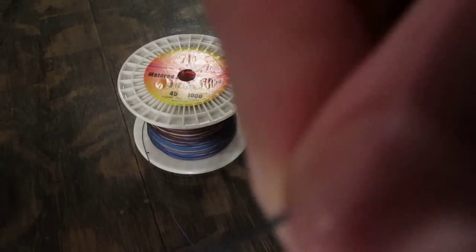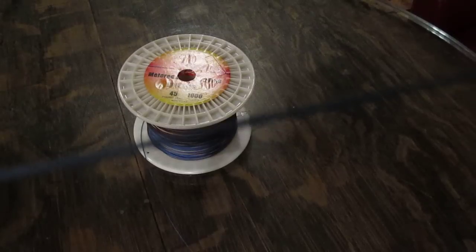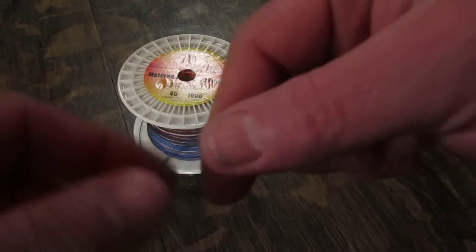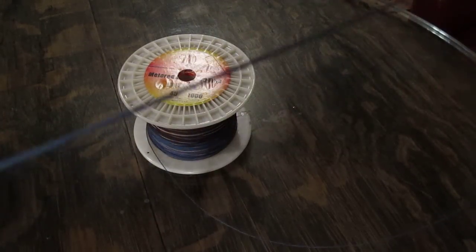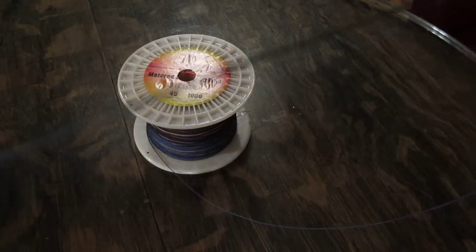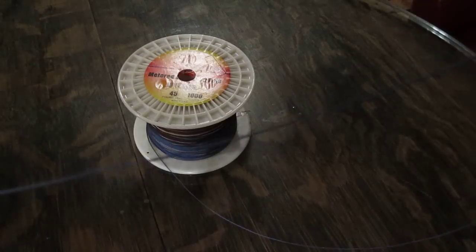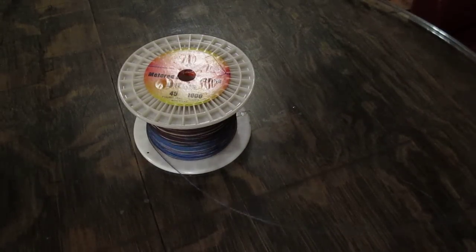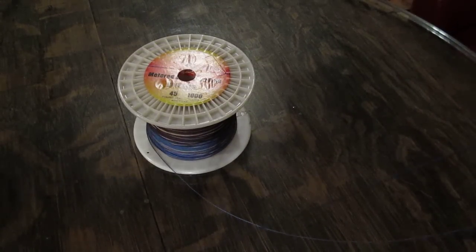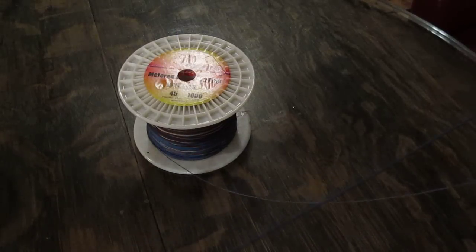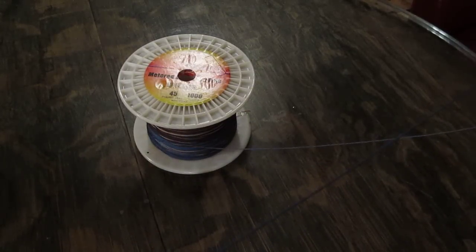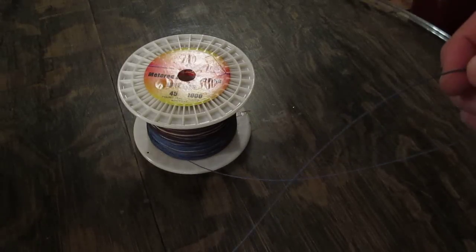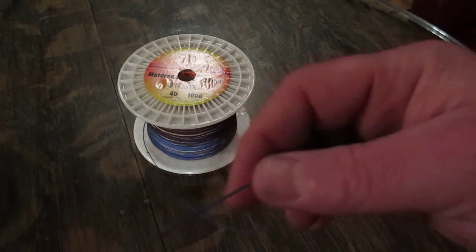But this line is used for trolling. And the reason they use this is for the drop rate, and also because with the color, you can use the colors to gauge how far out you are so that you know where your lure is being presented at.